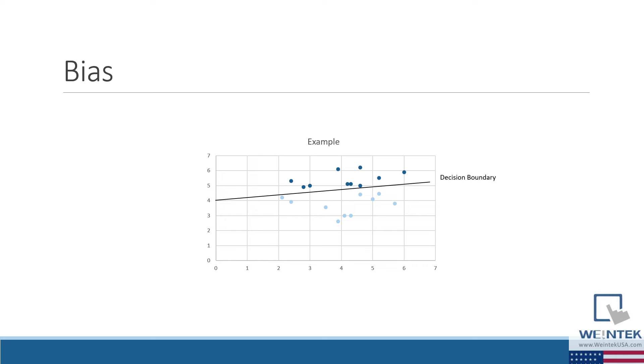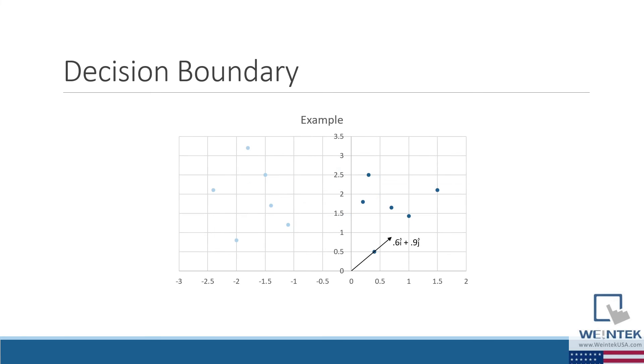But before I continue, let's address what it means to find a decision boundary. A decision boundary is a hyperplane normal to our weight vector. If the algorithm is successful, meaning that it converges on a set of weights that allow us to accurately determine the actual output, then the weight vector will point in the direction of the data set with an output of true, or a value of 1.